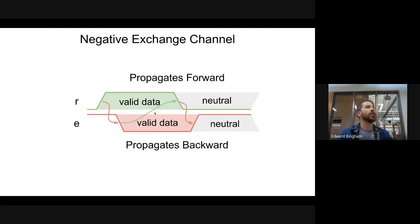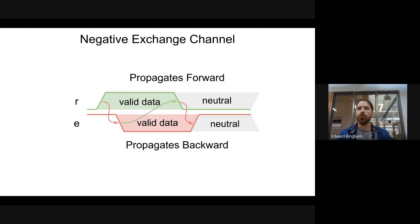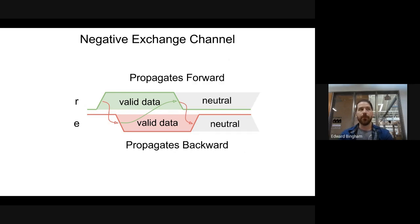That brings us to the negative exchange channel. In the negative exchange channel, the input requests go valid, which causes the input enables to transition to valid, followed by a neutral state in the input requests, and then a neutral state in the input enables. The valid state in the input enable is still one high/one low. But the neutral state is both high — it's an inverted encoding. We have to take care about implementing that.